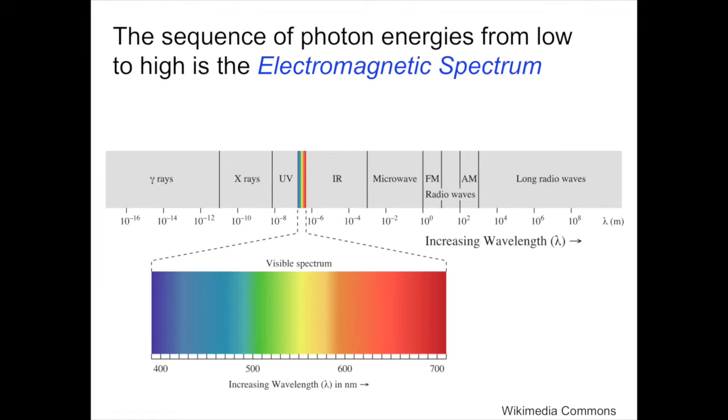The electromagnetic spectrum is the sequence of photon energies that runs from the lowest energies to the highest energies. The lowest energy photons are over here on the right in this diagram. It's traditional to draw them blue to red, high to low. The lowest energy photons are long wavelength radio waves that can many times be many thousands of kilometers long.